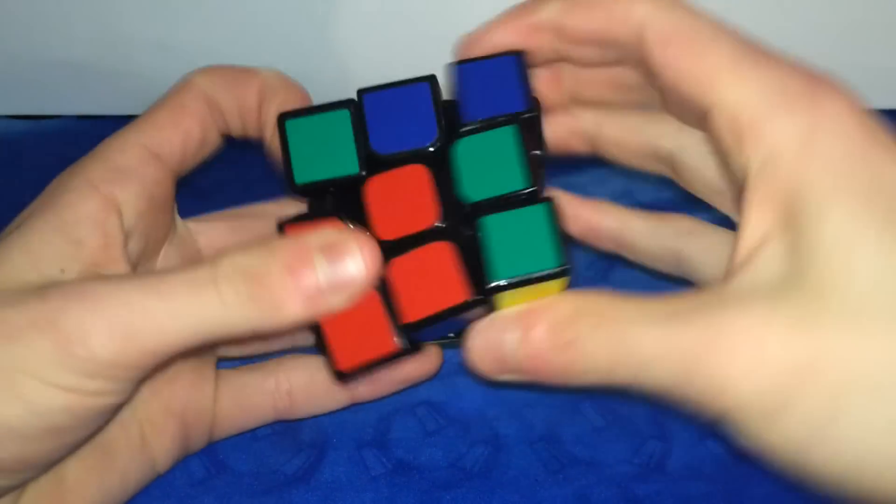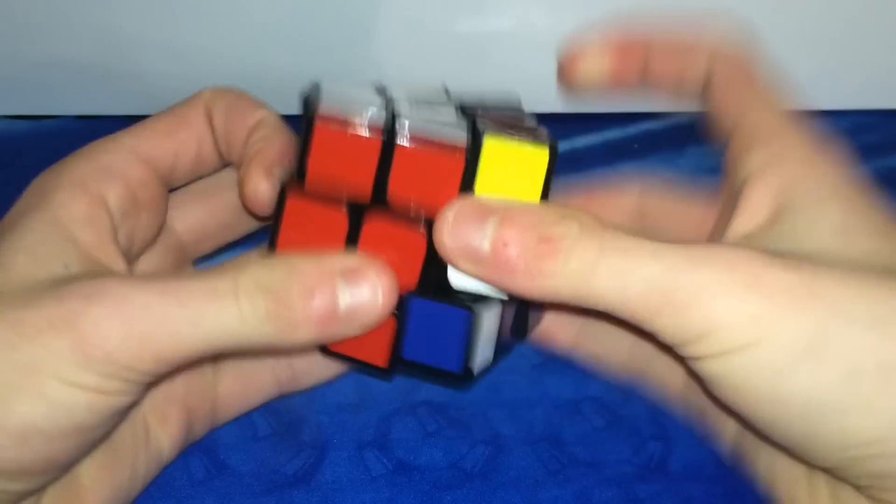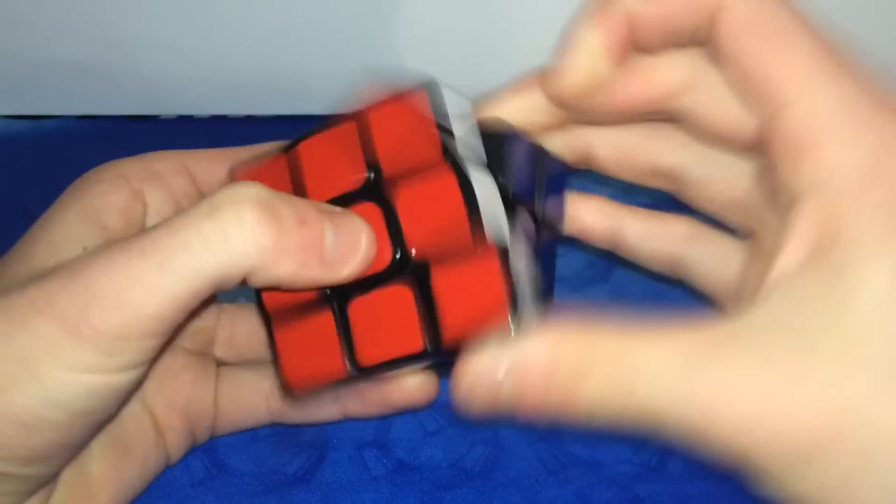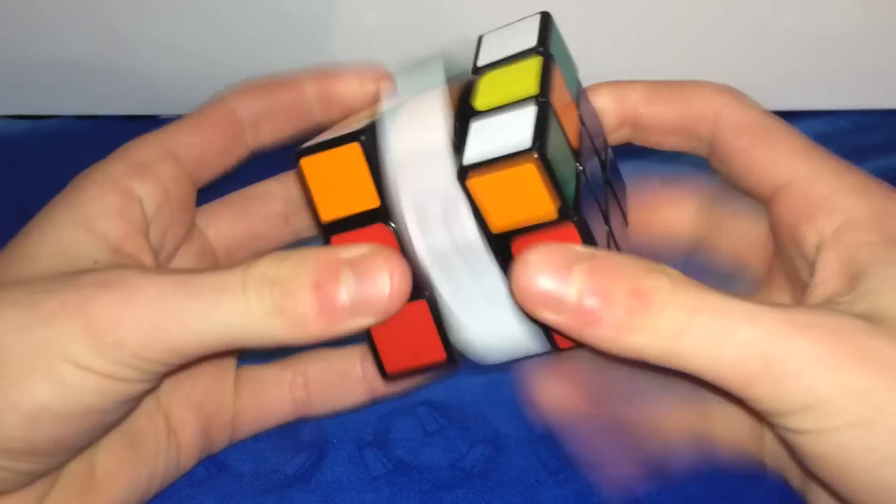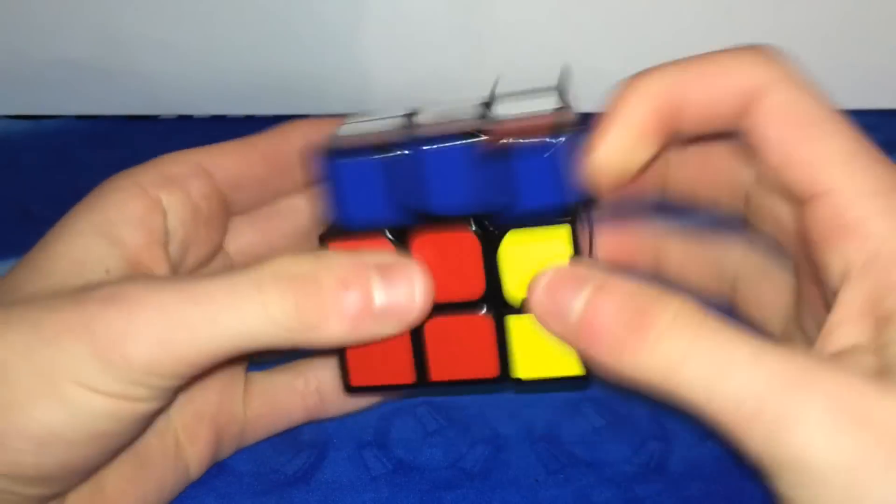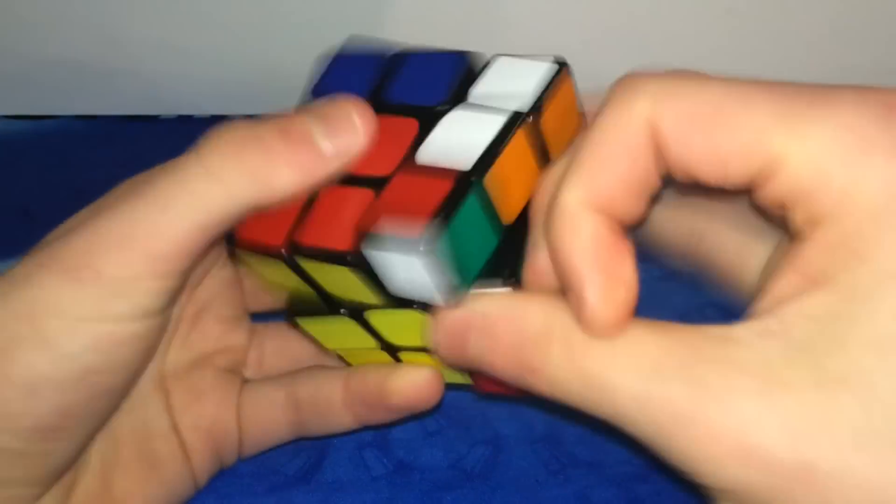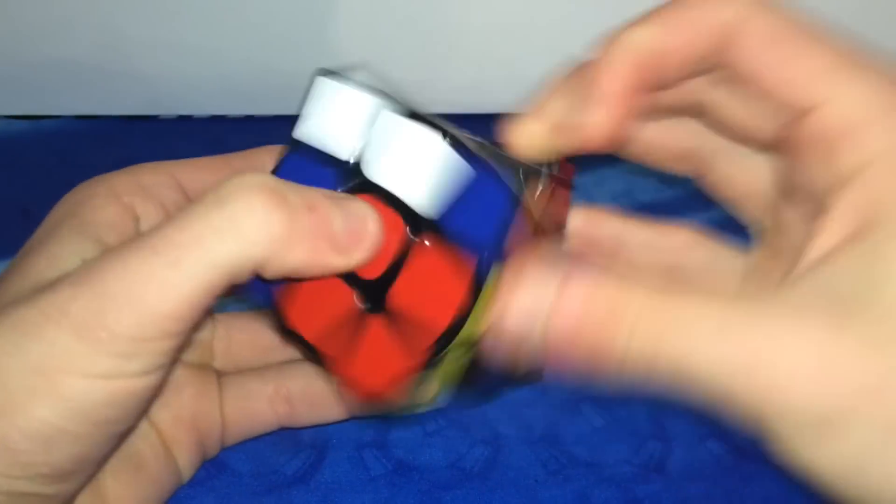During solves, this puzzle does have the 3-5-6 catches. It is kind of annoying, the M slices do work rather nicely on this puzzle, but when you go to the outer layers, it catches just like the Gans 3-5-6 did out of the box, which can be kind of annoying.